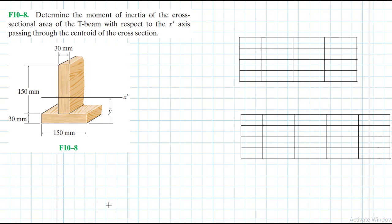Hello, I welcome you all to this another interesting screencast. We are going to be solving this engineering mechanics problem. It reads: determine the moment of inertia of the cross-sectional area of the T-beam with respect to the X-prime axis passing through the centroid of the cross-section. This problem is coming from the Engineering Mechanics Statics textbook, 13th edition by Hibbeler.